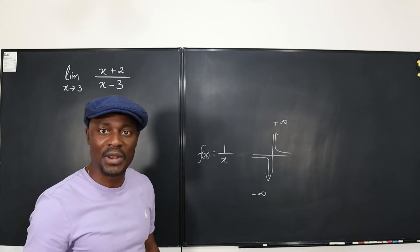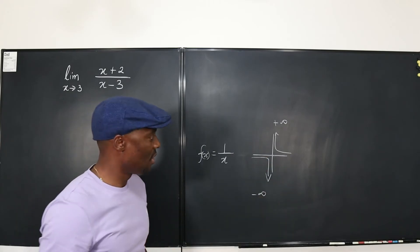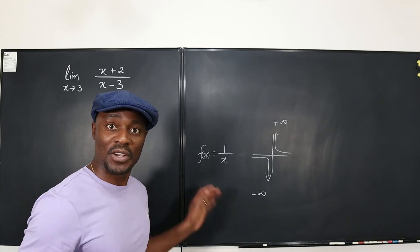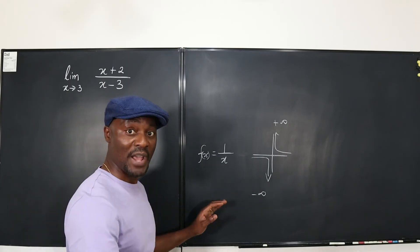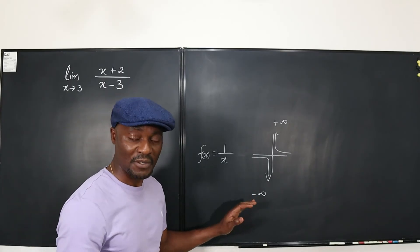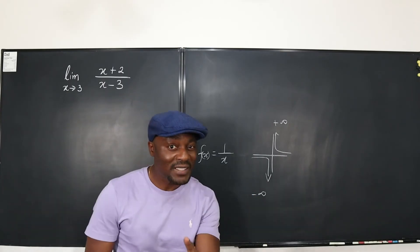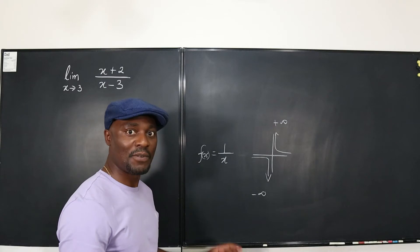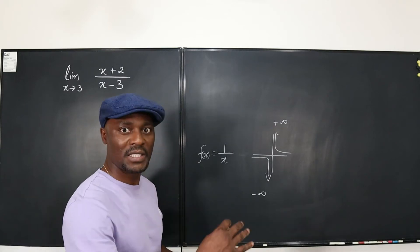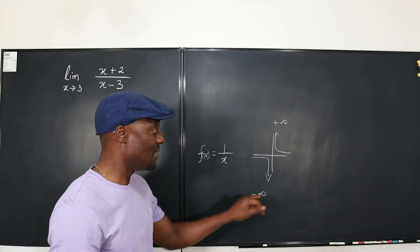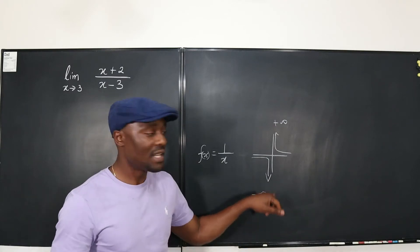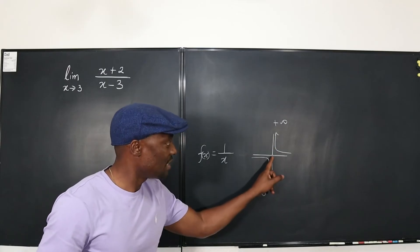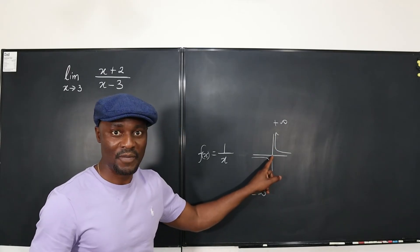Because if I tell you what's going to happen at zero, you have to ask me: are we talking about from the right or from the left? When you ask that question and I say from both directions, you go: I am getting different answers. Then you know the limit at this point where x equals 0 does not exist.